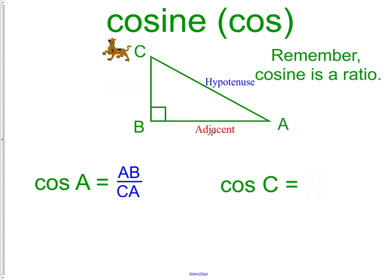We have adjacent over hypotenuse. Now if we move him up here to angle C, we have to move the adjacent. The adjacent is now located right there, CB. If we have adjacent over hypotenuse, the answer would now be CB over CA.